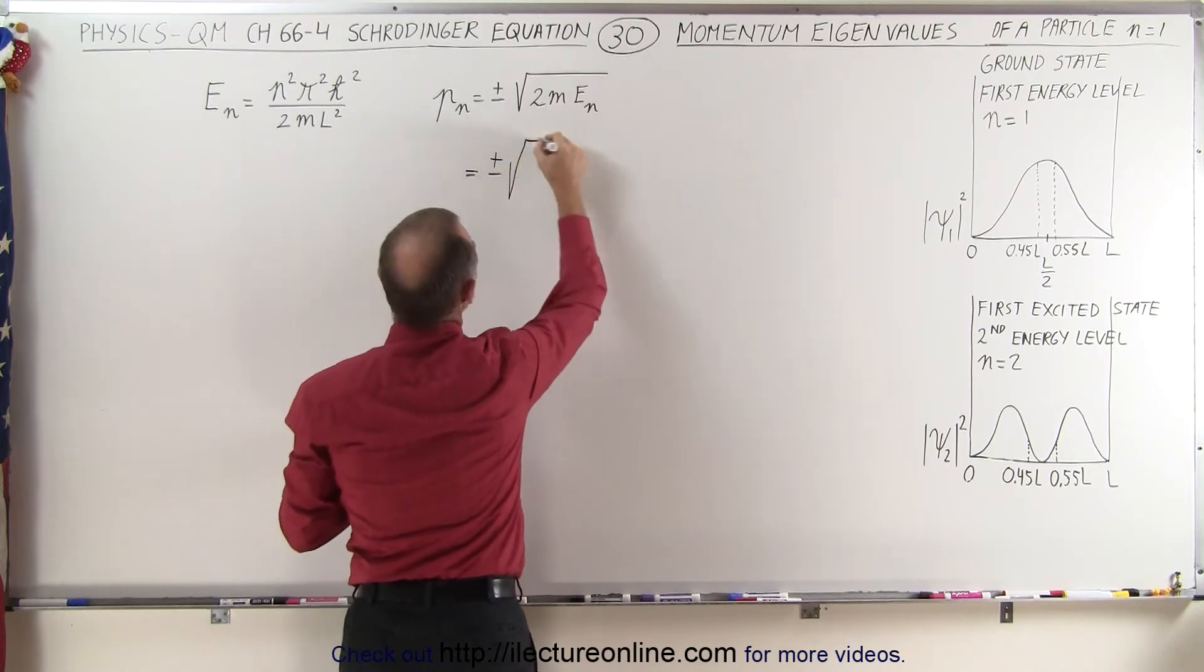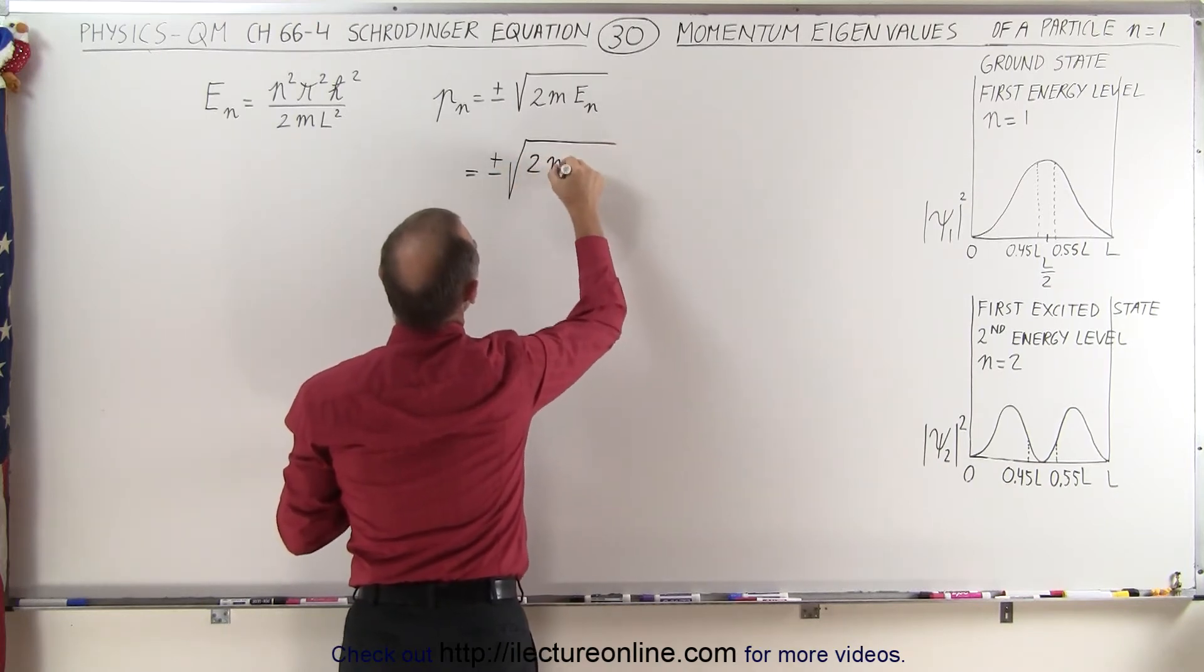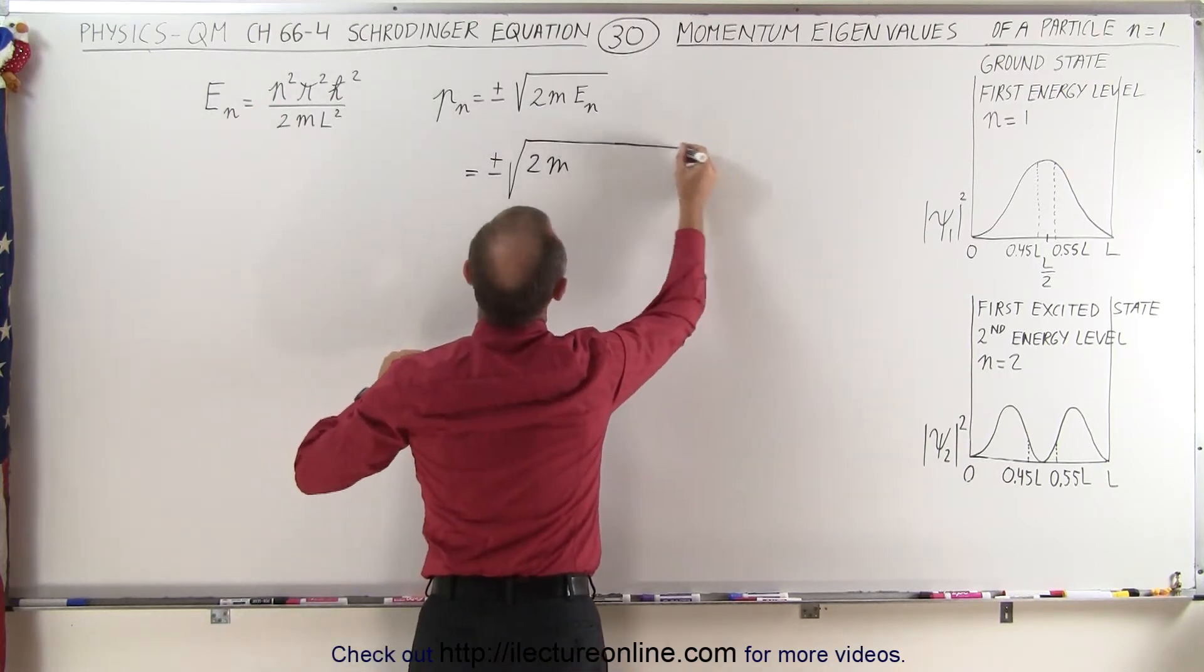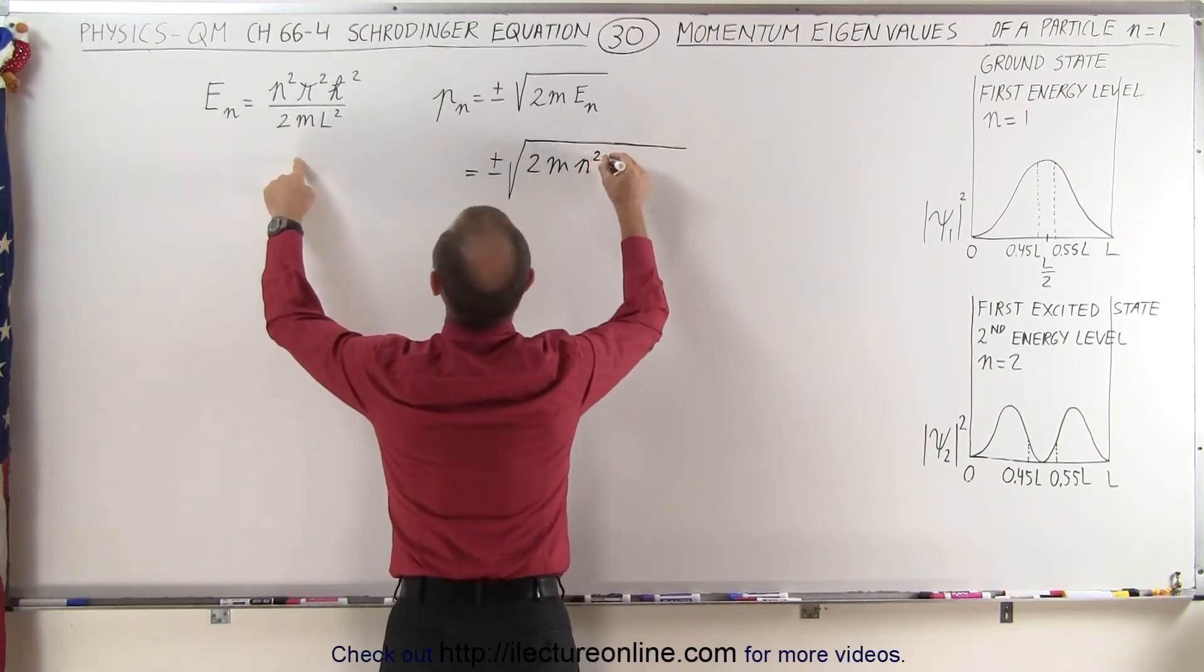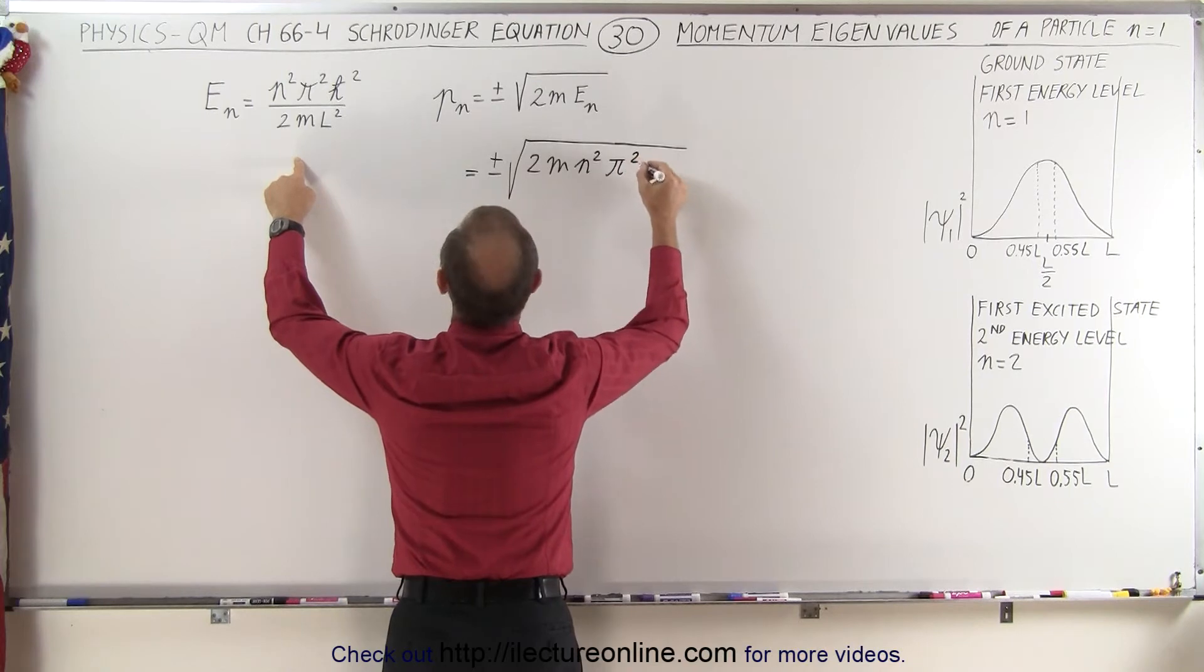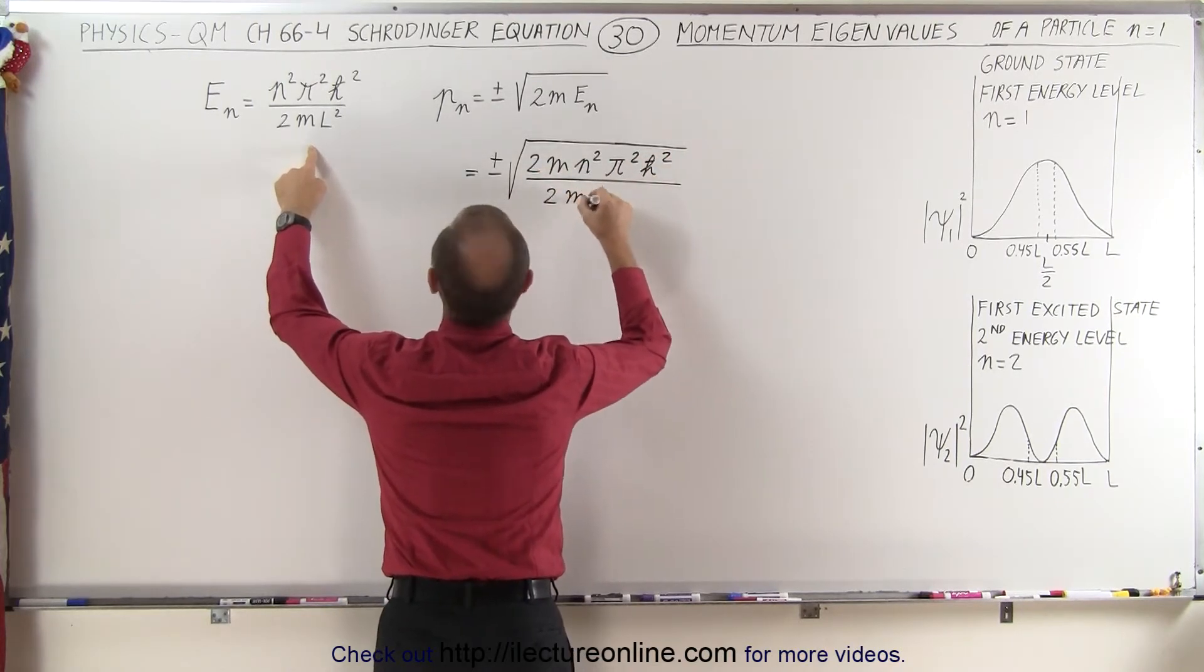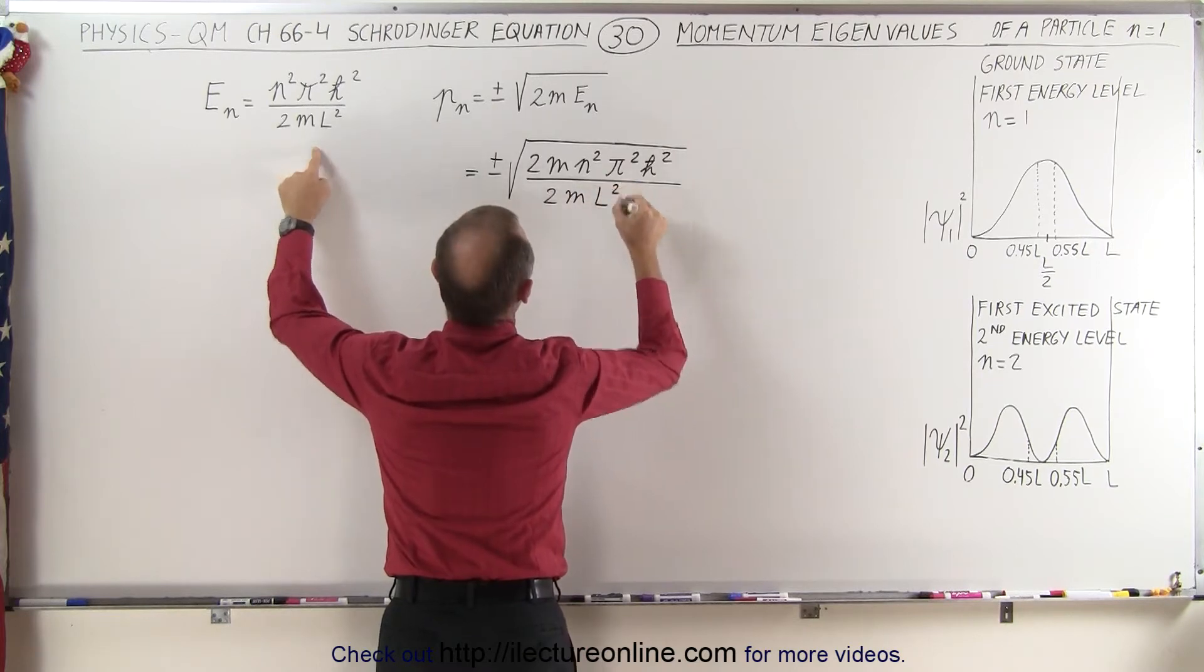We get plus or minus the square root of 2m and instead of e sub n we're going to write this in there. So we end up with n squared pi squared h-bar squared in the numerator and in the denominator we get 2m times l squared.